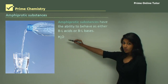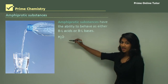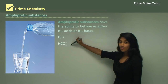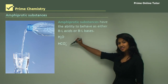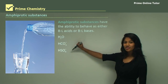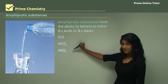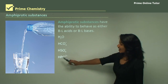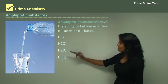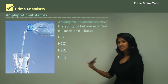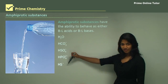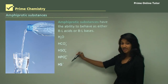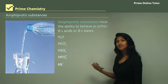For example, we have water that can accept or donate a proton. We have the hydrogen carbonate ion that can accept or donate. We have the hydrogen sulfate ion as well. We have hydrogen phosphate, both able to donate and accept. And we have hydrogen sulfide, which is HS with a minus charge, that can both accept and donate.